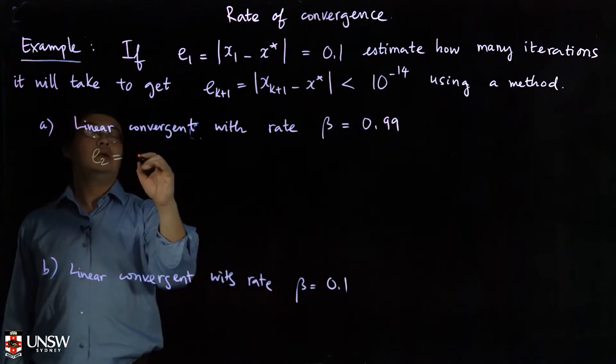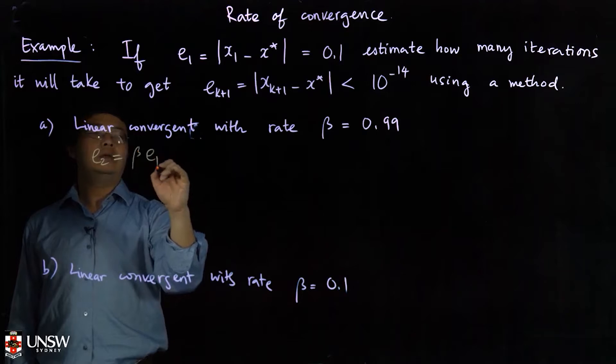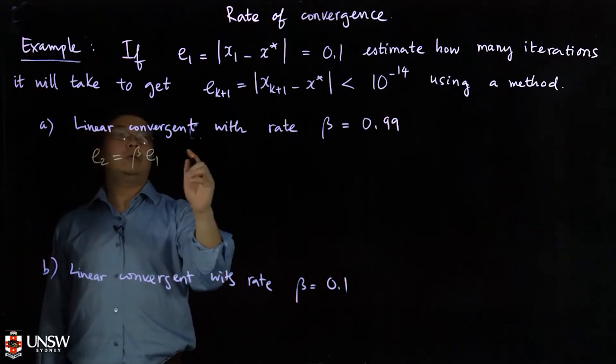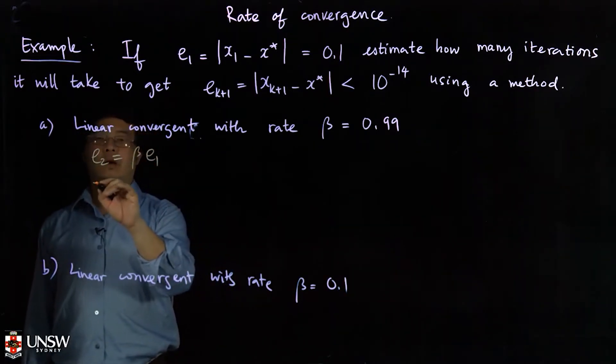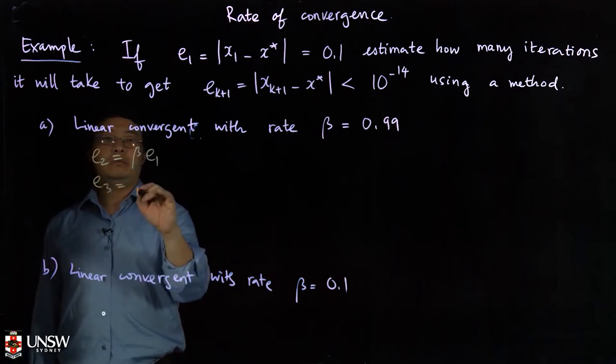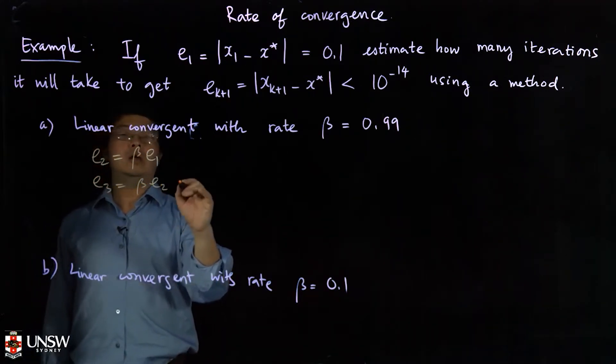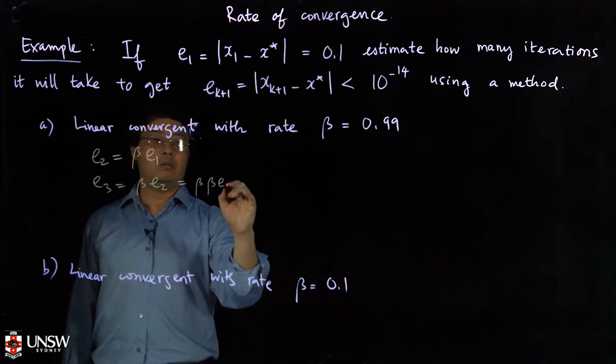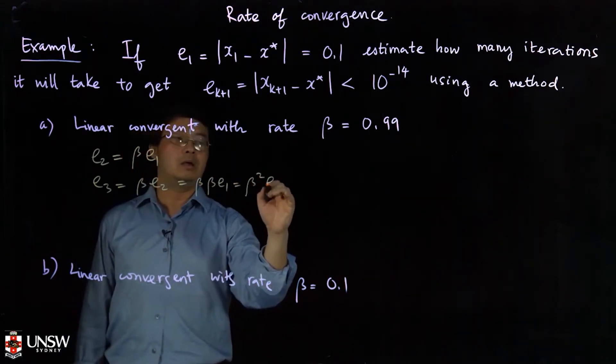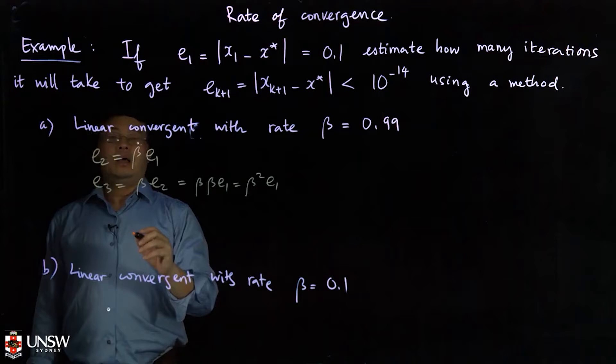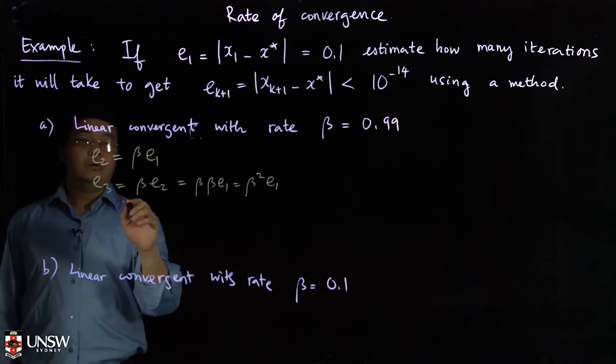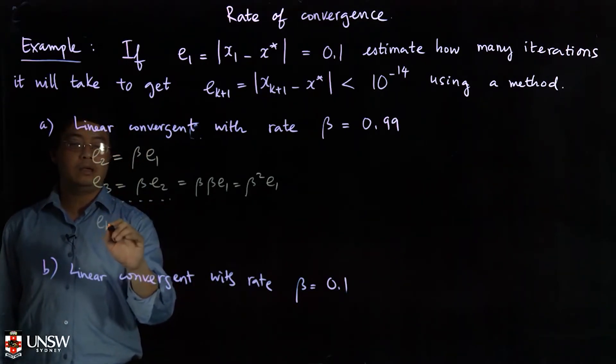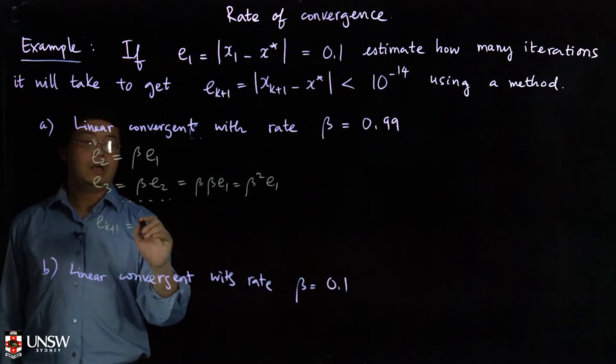Now we start with the first case. Suppose I have e1, then what is e2? My e2 will be β*e1 because it's linear convergence. What is e3? e3 will be β*e2, and e2 is β*e1, so we have β²*e1.